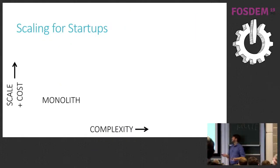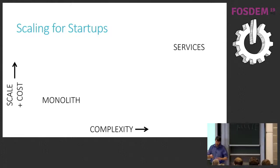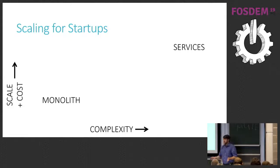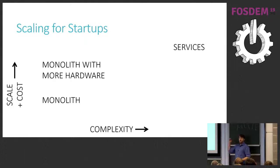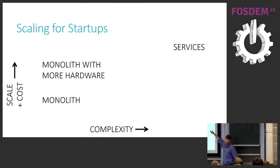You hear a lot on the internet about how monoliths are bad and hard to scale, and that what you should have instead is service-oriented architecture. This is great, but it's very expensive and complicated — it adds a lot of complexity. Monoliths tend to be very simple and self-contained. What we found is a really good way to start is with a monolith, then when you have customers and traffic, throw hardware at the problem. That buys you time to start doing services. Start with a monolith, get customers, use money from customers to build services.